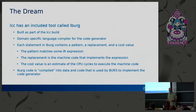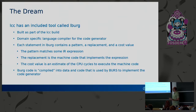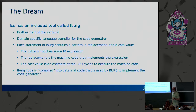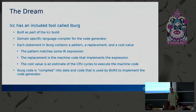LCC has a tool called Elberg that implements a domain-specific language for generating code generators, where you have a set of statements with a pattern of IR to match, a blob of something that looks like assembly code to generate, and an estimate of how much that blob of assembly costs. This gets compiled down into data and code built into the compiler and used by BURRS, the bottom-up rewrite system, to implement the code generator.